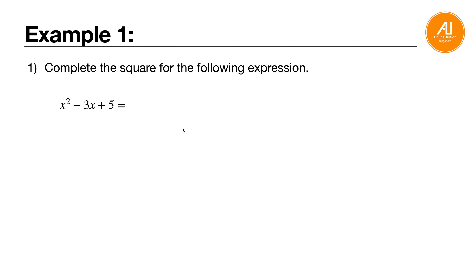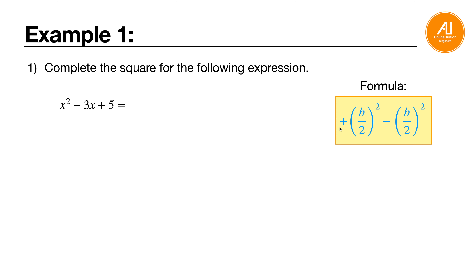Let's look at the first question. Example: x squared minus 3x plus 5. First of all, you need to know the formula for completing the square. The formula is: plus b over 2, bracket squared, minus b over 2, bracket squared — they cancel each other. So for this question, a equals 1, b equals negative 3, and c equals 5.